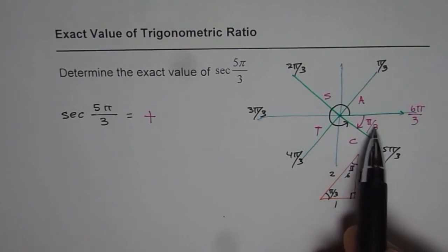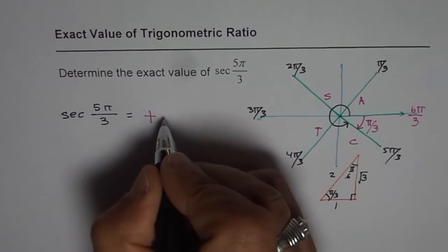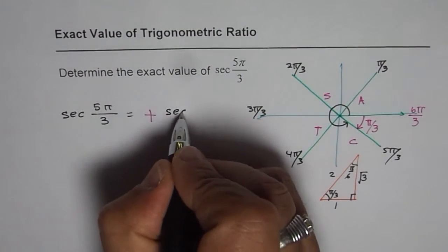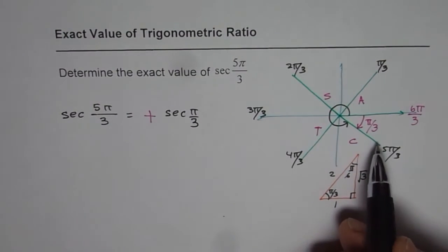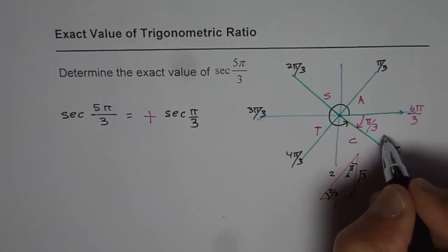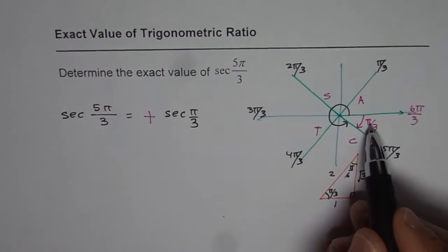So cos of pi by 3 is... So this we could write as positive secant pi by 3. Why positive? Since we are in quadrant 4. And secant pi by 3 because the related acute angle is pi by 3.